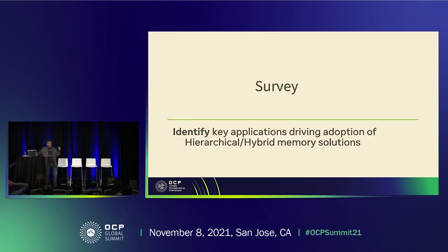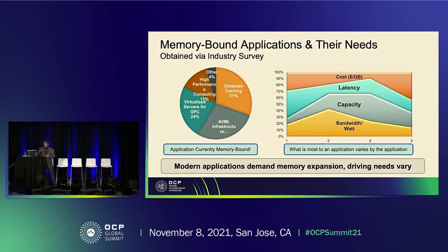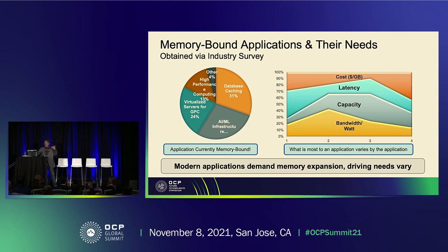We did a survey within OCP to look at the key applications driving adoption of what we're calling software-defined memory, hierarchical memory, tiered memory, or in-memory expansion. We got a lot of good inputs. Definitely many applications are bound by memory. The leading applications were AI/ML — no surprise — followed by databases and caching, virtualized servers, and HPC. Broadly, people are saying their growth is dependent on memory expansion in terms of bandwidth or capacity.